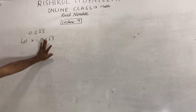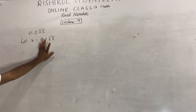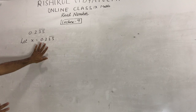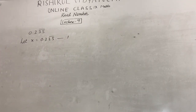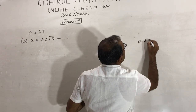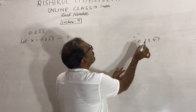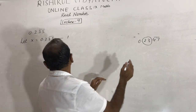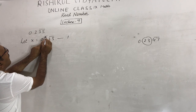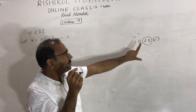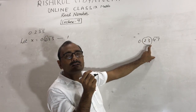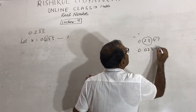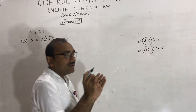First, look at how many digits are between the decimal point and the bar. Here only one digit is there — 2. So first multiply the equation by 10. For example, if it were 0.2347 bar, you would multiply by 100 because two digits are between the point and the bar. If one digit is between point and bar, multiply both sides by 10; if two digits, multiply by 100; if three digits, multiply by 1000.